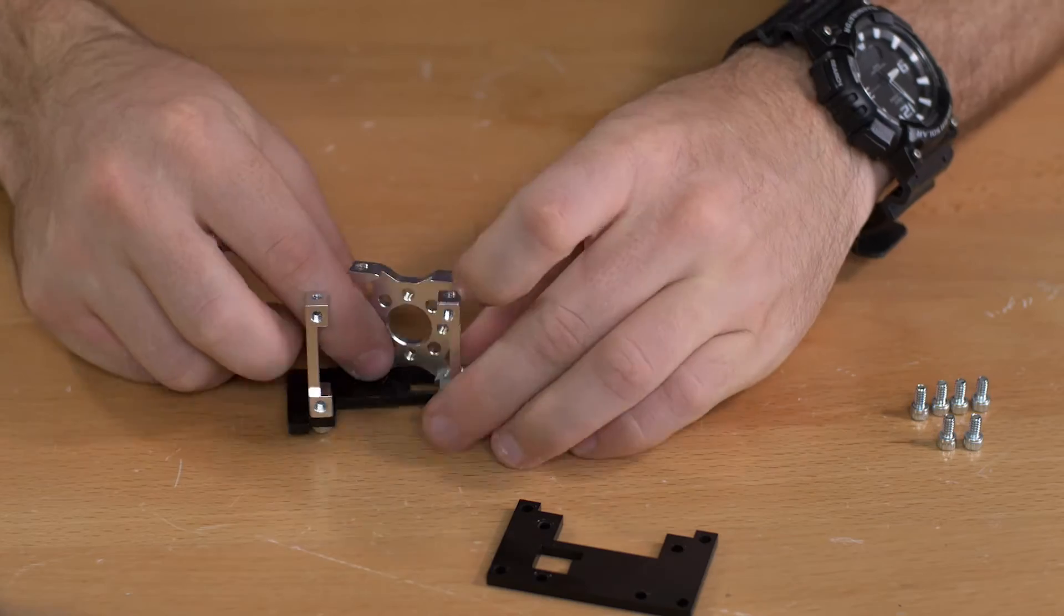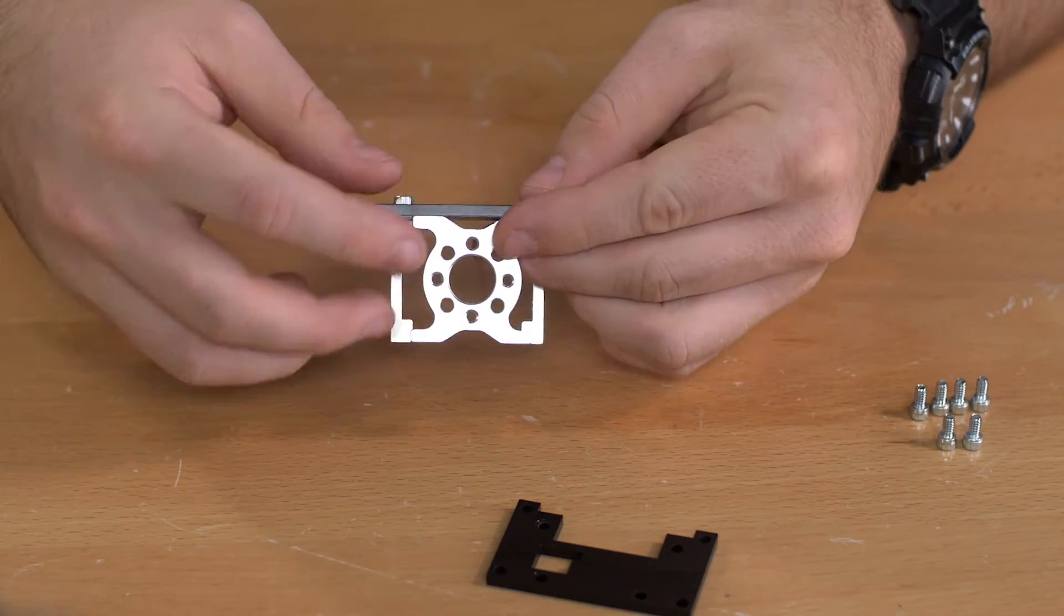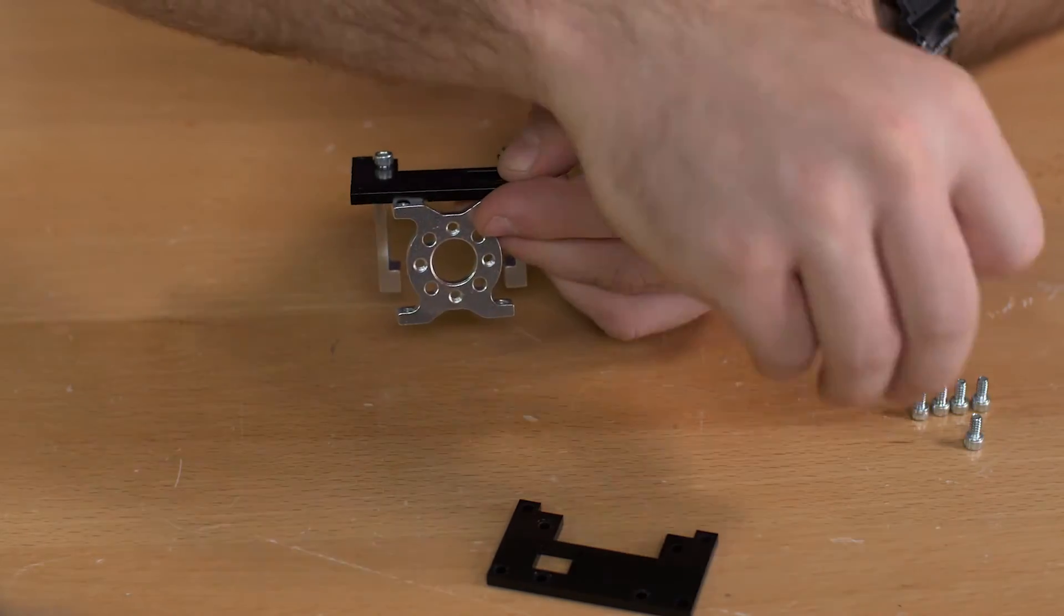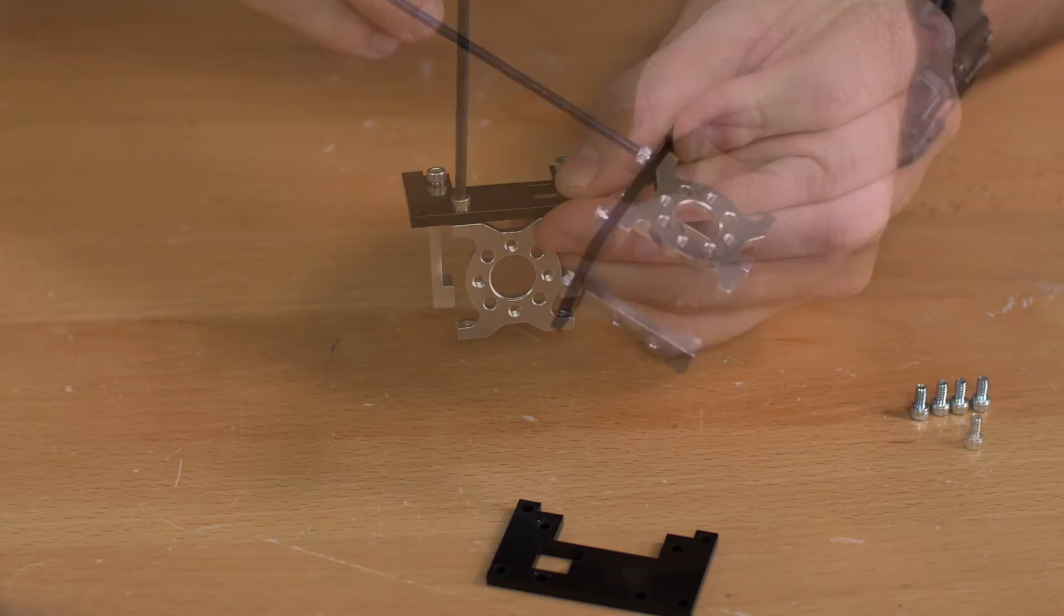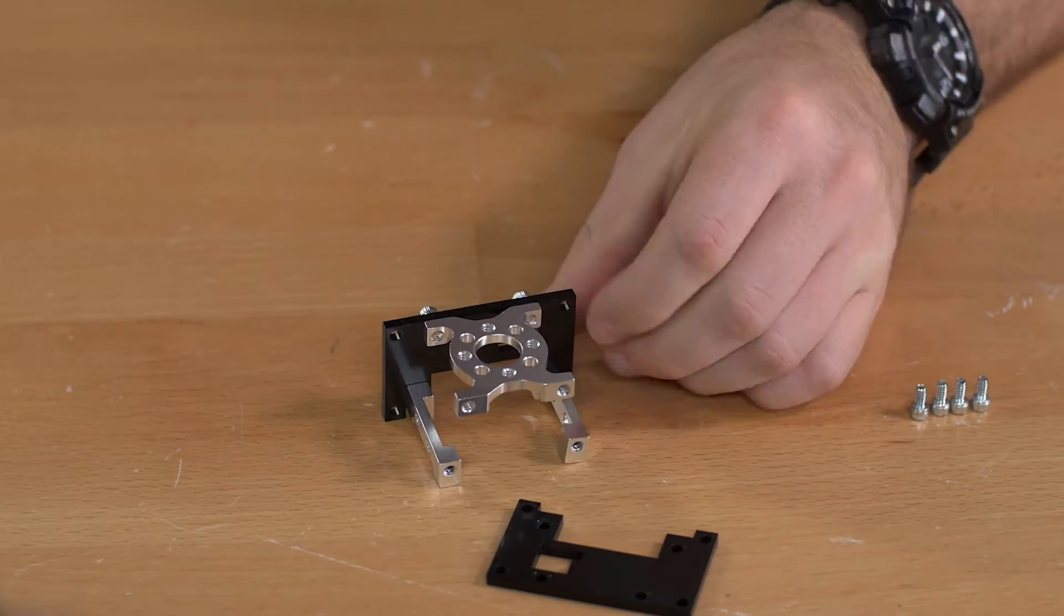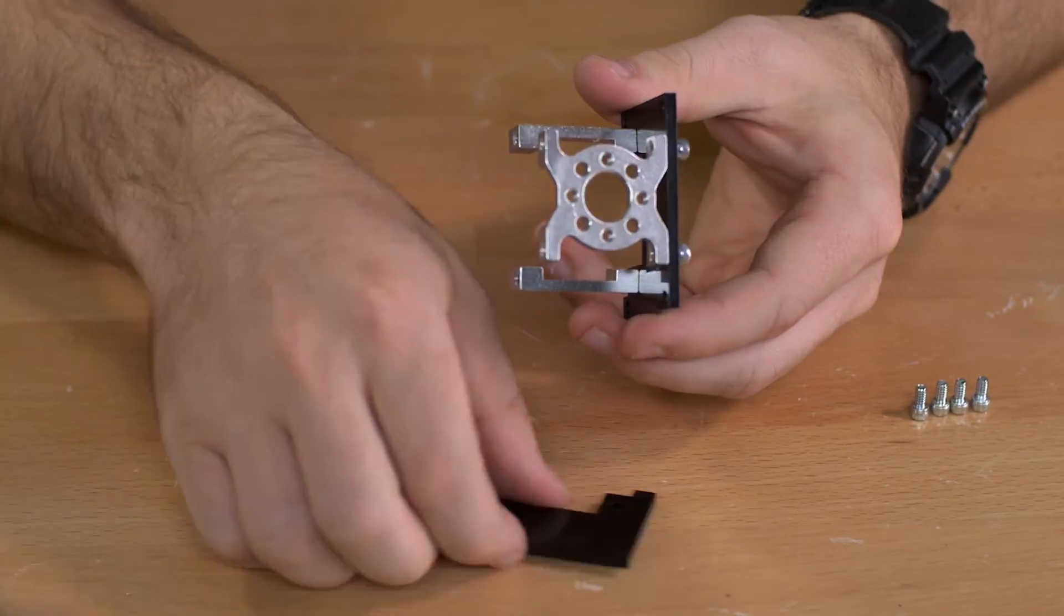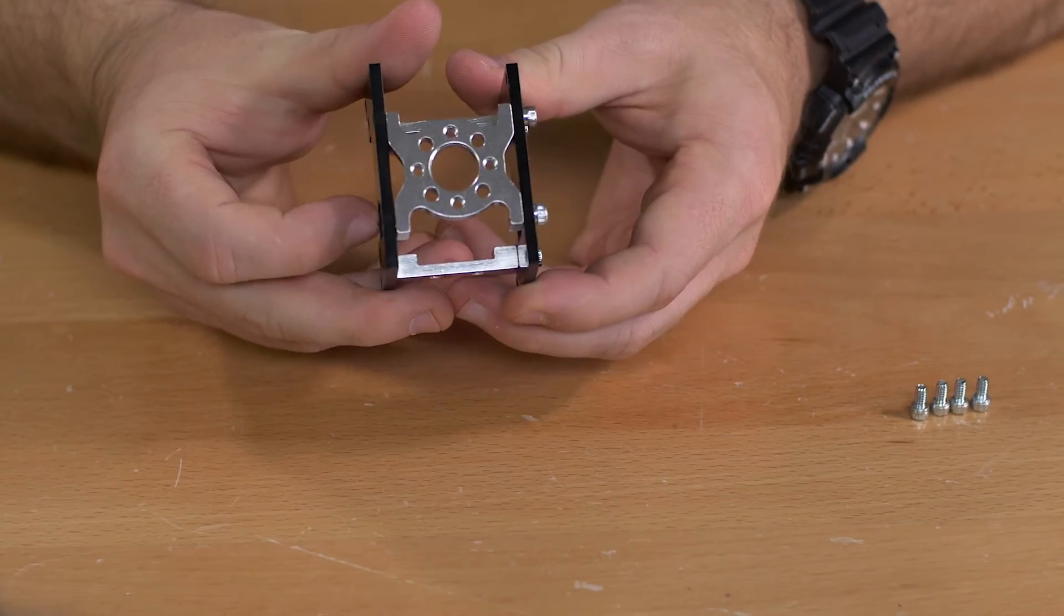Then you're going to attach this piece. Again this will use the quarter inch socket head screws. Once you have that together you're going to add the plastic piece to the other side.